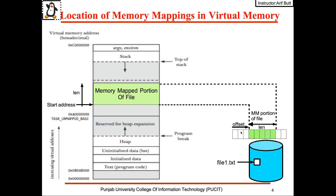Here you can see the linear view of the file. We can map the entire file, but in this example we have memory-mapped a portion of the file starting from an offset, and the area to be mapped is a specified number of bytes.